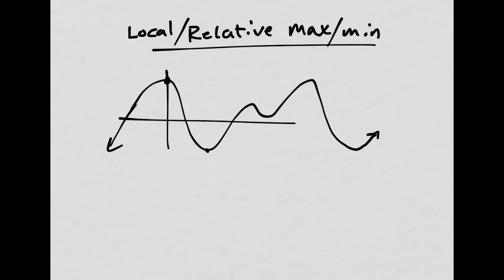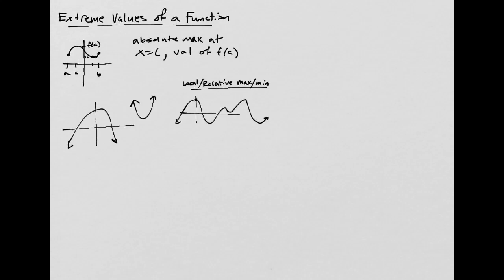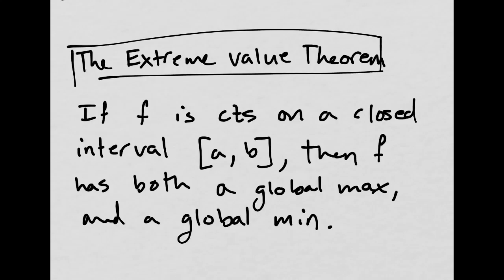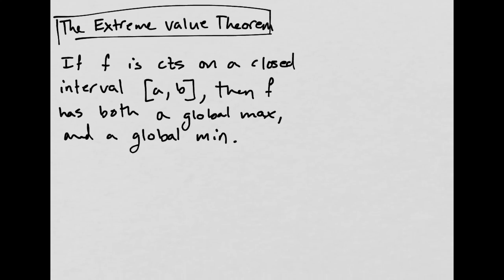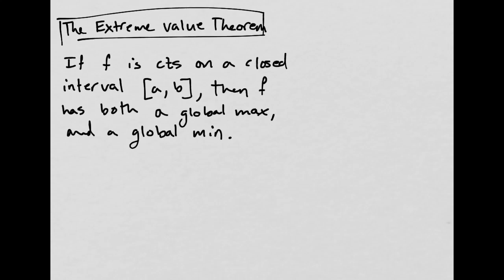So let's talk about the extreme value theorem and then we'll get to examples. So the extreme value theorem just says if you have, and I'm going to draw a picture for it. So it says if F is continuous on a closed interval from A to B.